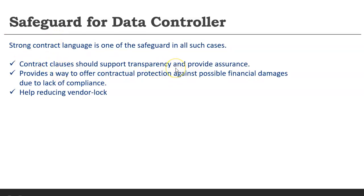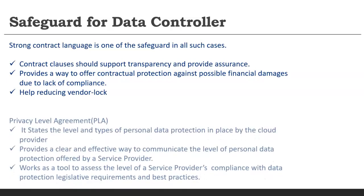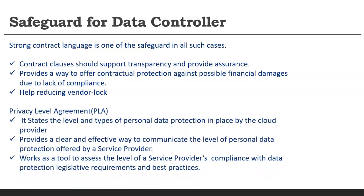A strong contract language is one of the key safeguards in all such cases. It should be transparent and provide assurance, and financial damages can be passed on to the CSP. This also helps reduce vendor lock-in, which we covered in lecture two of Topic 4 — strong contract language helps in that scenario as well. Apart from this, you can sign a Privacy Level Agreement, or PLA.